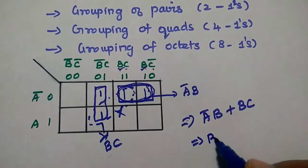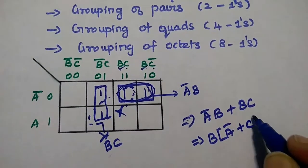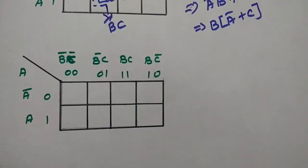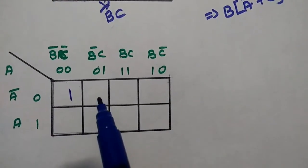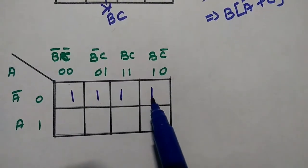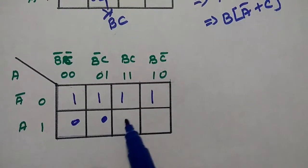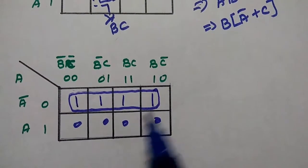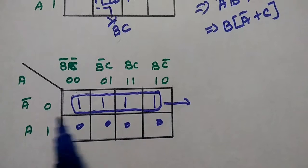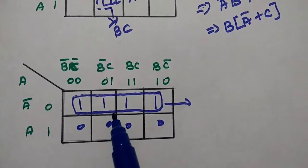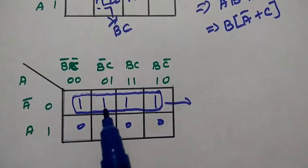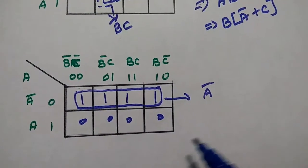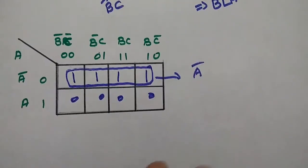If we have values giving A-bar B and B-bar C groups, we can write the answer as A-bar B + B-bar C, and further simplify by factoring out B to get B(A-bar + C). For a group of 4 ones (quads), if the 4 ones are grouped together, the common term might simplify to a single variable such as A-bar.